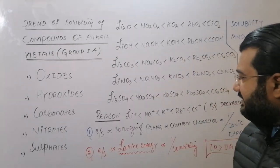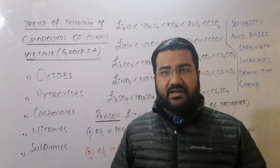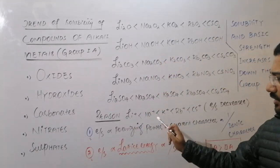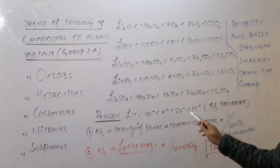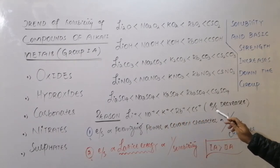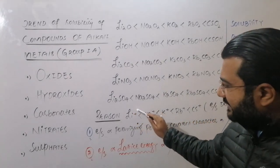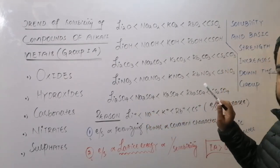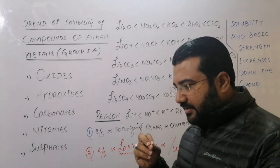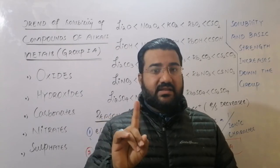Now, the important question is: why does the solubility of all these compounds keep on increasing as we move from top to bottom? When we move down the group, the ionic radius keeps on increasing. As ionic radius increases, the charge density — which is the ratio between charge and size — keeps on decreasing. So the charge density of the lithium ion is maximum and that of the cesium ion is minimum.